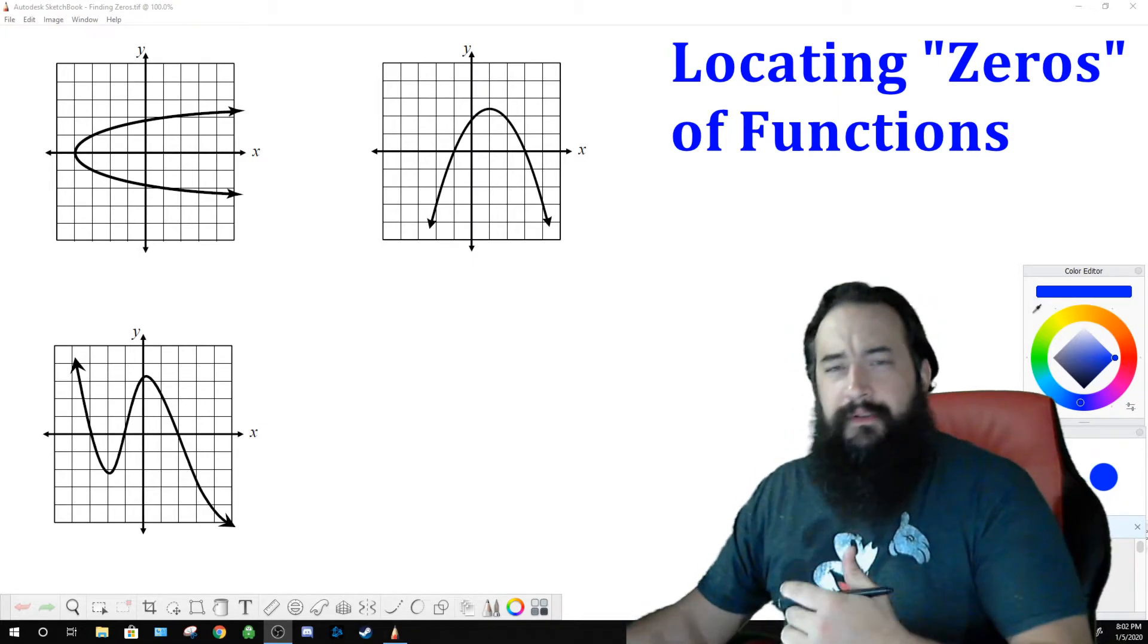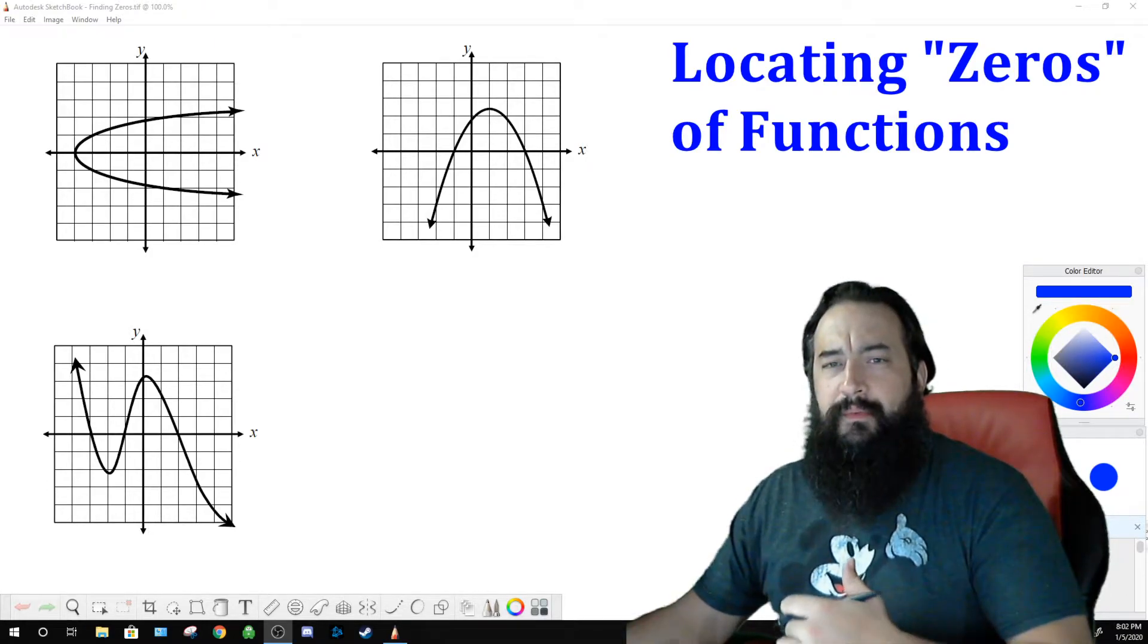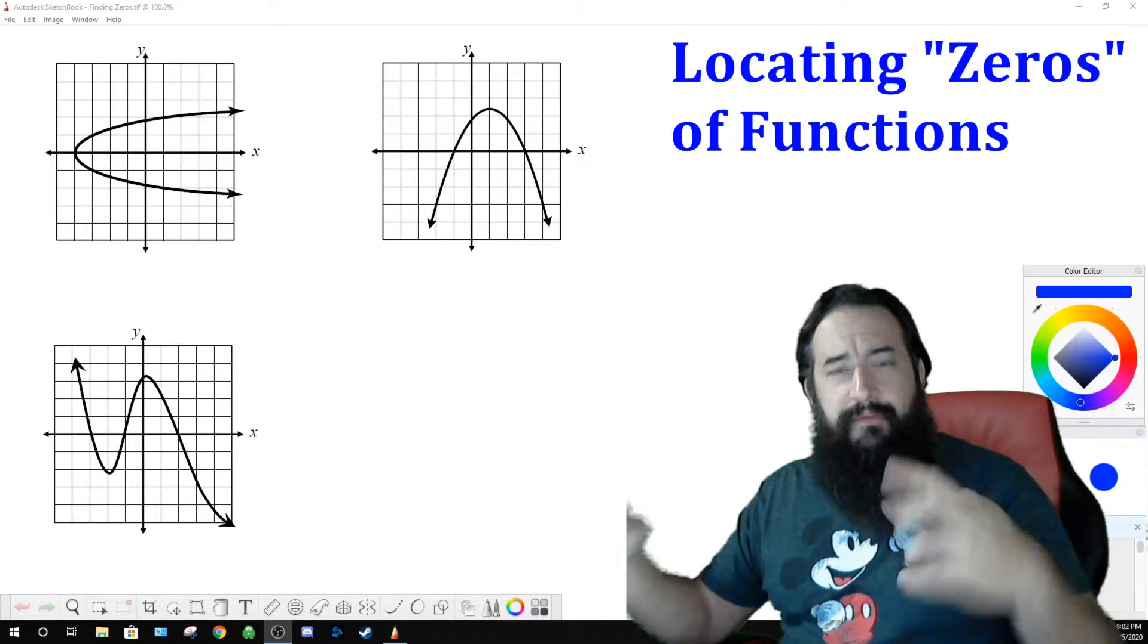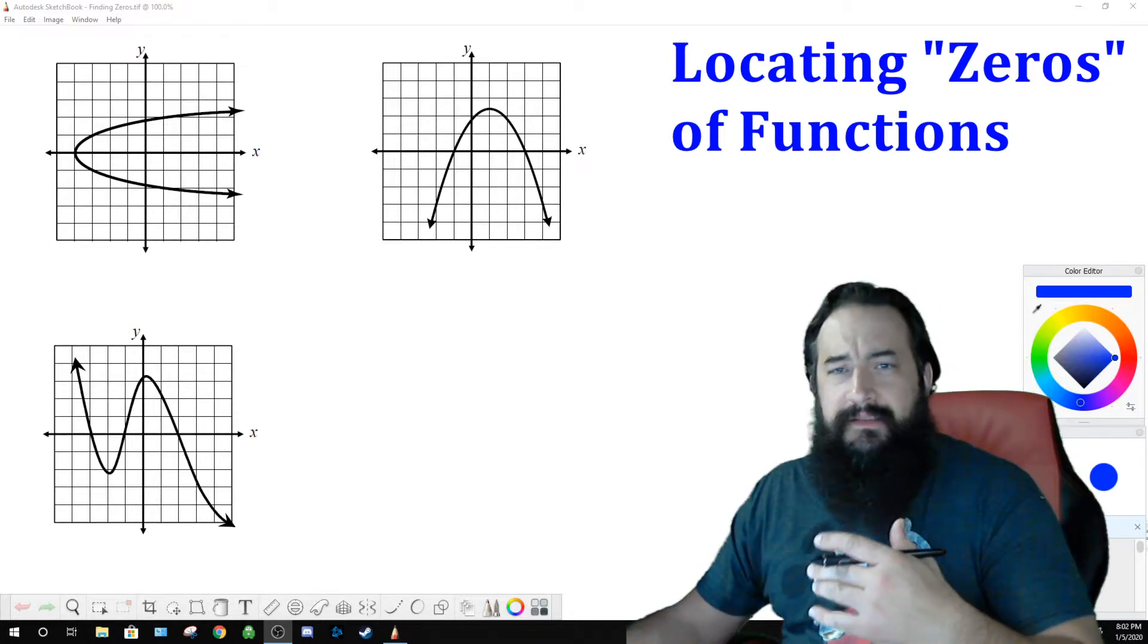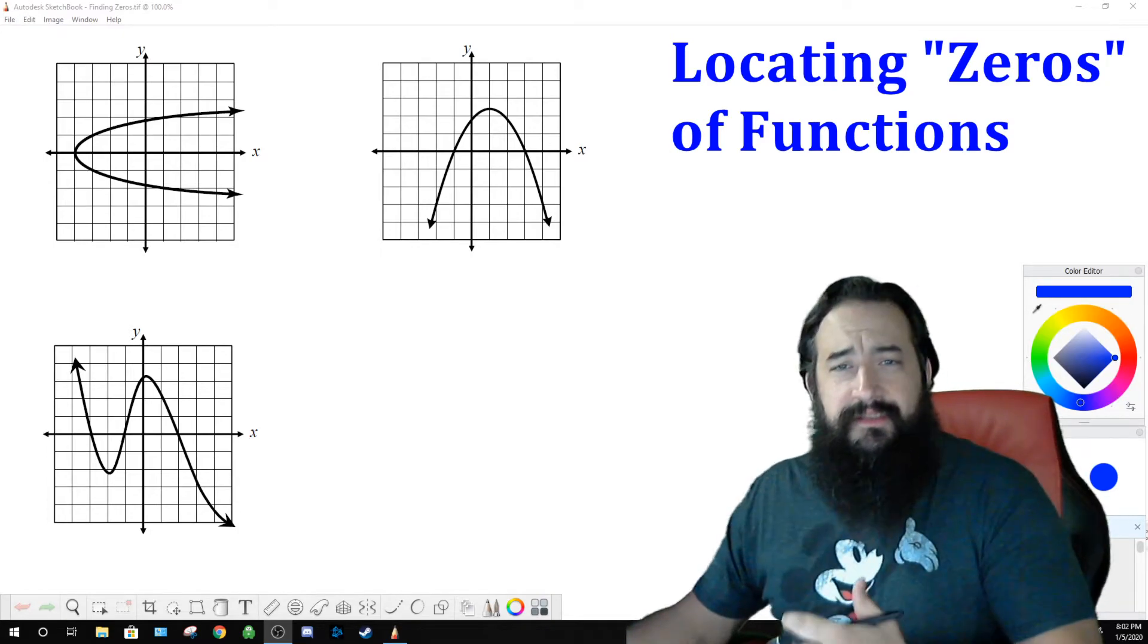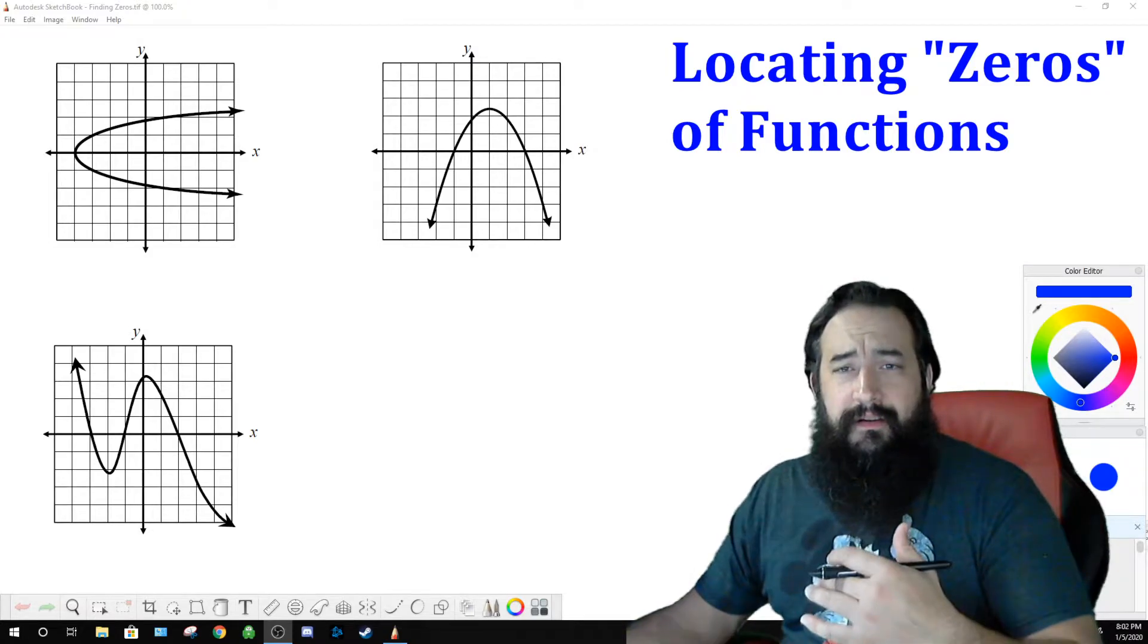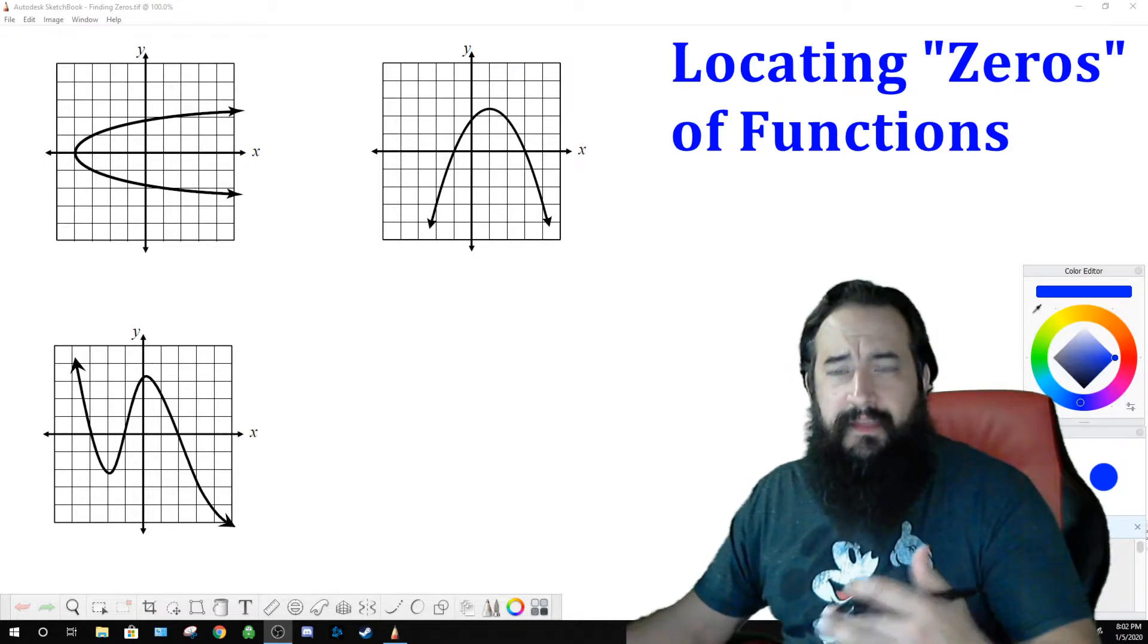So, we are currently working through functions and I assigned a homework assignment where students have to find the zeros of functions. And first of all, a zero is another way of saying a solution, which is another way of saying a root, which is another way of saying an x-intercept. So all four of those vocabulary phrases are the same thing. Zeros, x-intercepts, roots, and solutions are all the same thing.